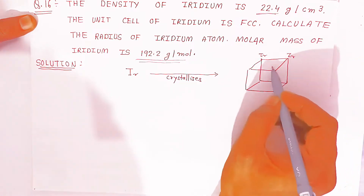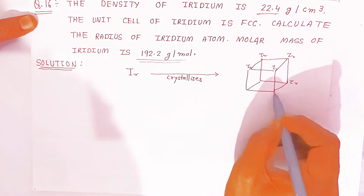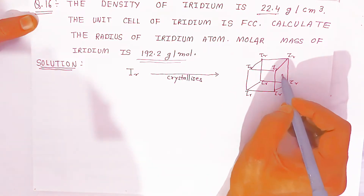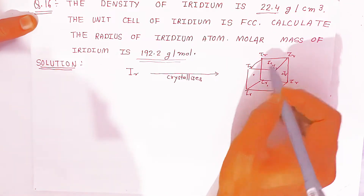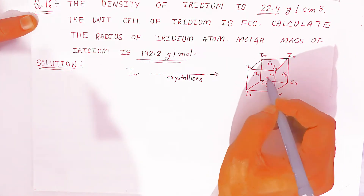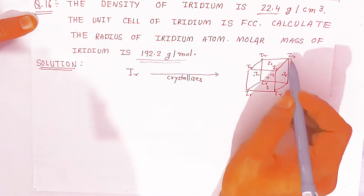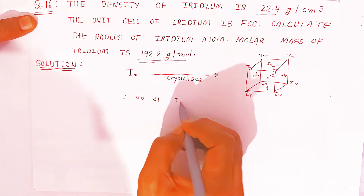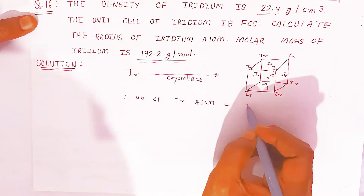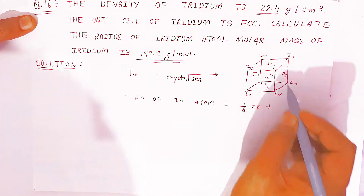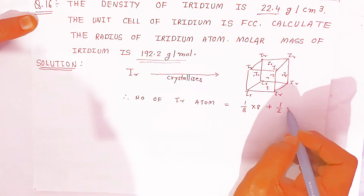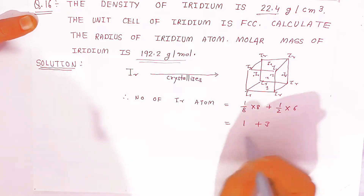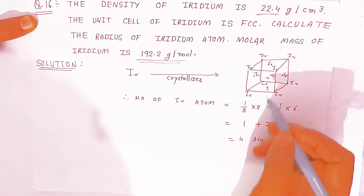There are 8 iridium atoms at 8 corners. Because FCC has 6 faces, iridium atoms are also present on each surface — 6 face-center atoms total. So the number of iridium atoms in FCC = (1/8 × 8) + (1/2 × 6) = 1 + 3 = 4 atoms. FCC contains 4 atoms — you already know this.